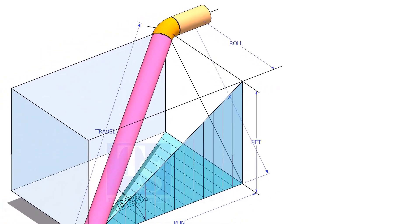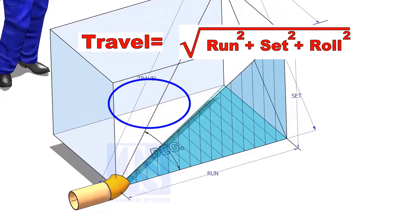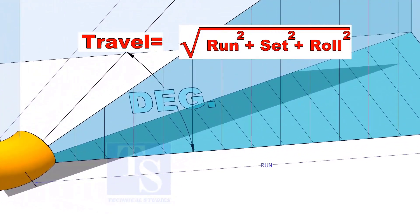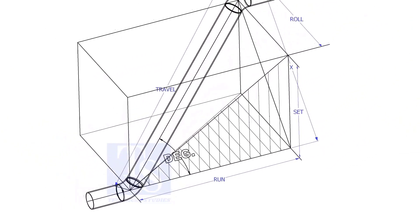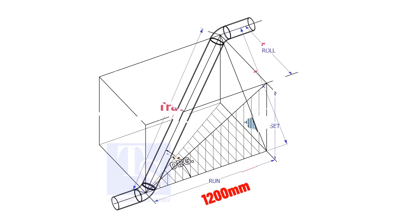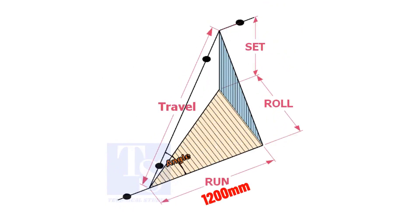The formula to calculate the travel length is root of the sum of the run, set and roll. Assume that the run is 1200 mm, set is 1000 mm and the roll is 800 mm.